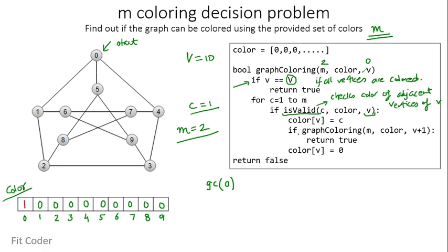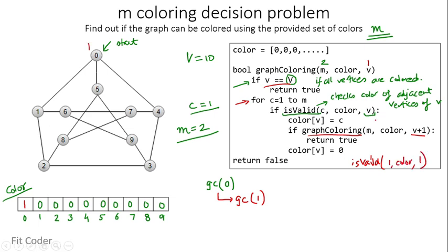We recursively call graph coloring for vertex 1. The base condition is false, so we enter the for loop with C=1. We invoke isValid for C=1 at vertex 1. The adjacent vertex 0 has color 1, so isValid returns false.